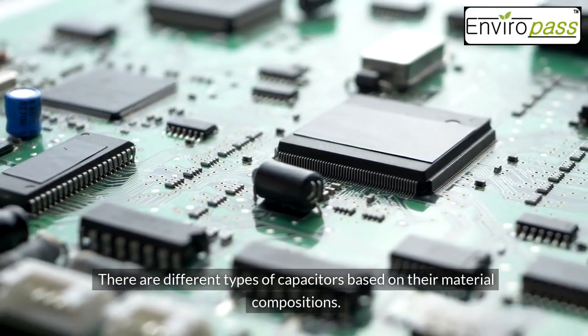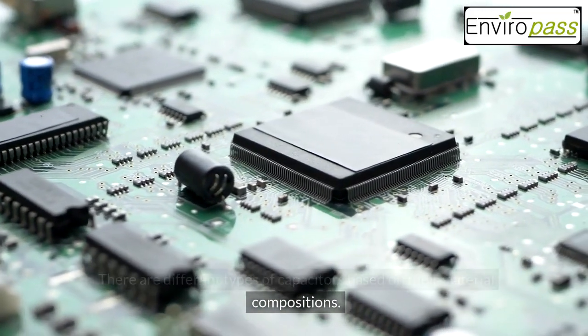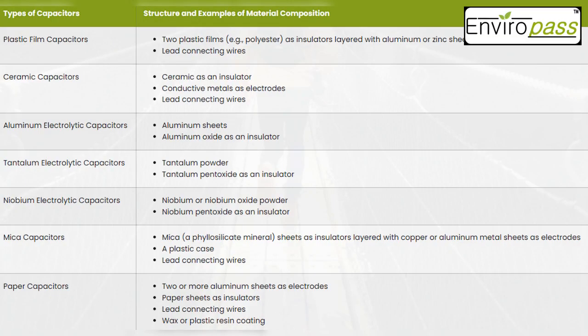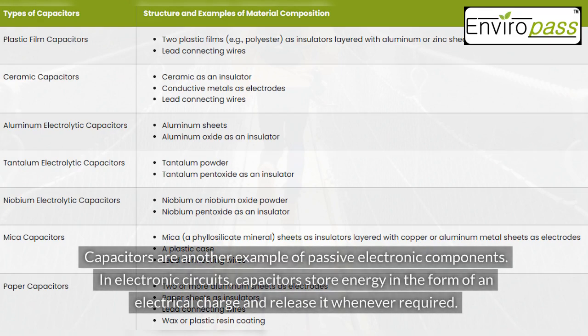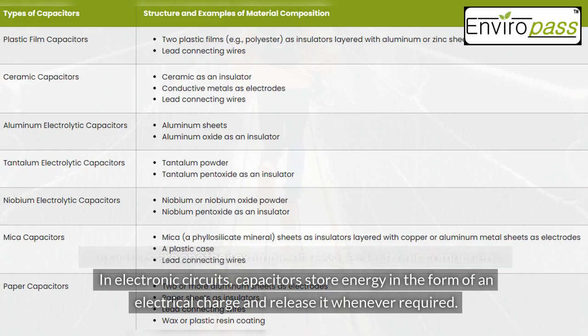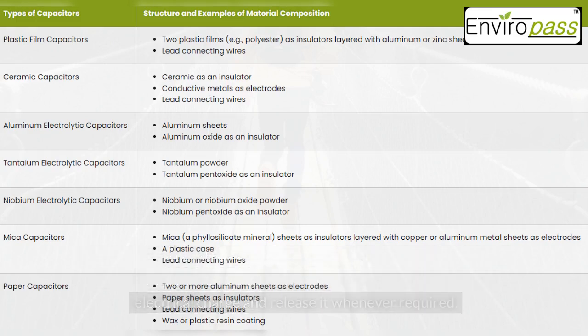There are different types of capacitors based on their material compositions: plastic film capacitors, ceramic capacitors, aluminum electrolytic capacitors, tantalum electrolytic capacitors, mica capacitors, and paper capacitors. Capacitors are another example of passive electronic components. In electronic circuits, capacitors store energy in the form of an electrical charge and release it whenever required.